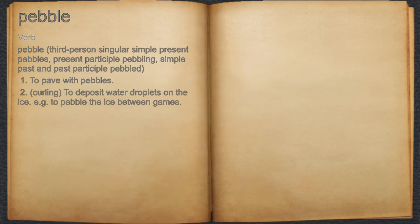Pebble. Verb. 1. To pave with pebbles. 2. Curling: to deposit water droplets on the ice, e.g. to pebble the ice between games.